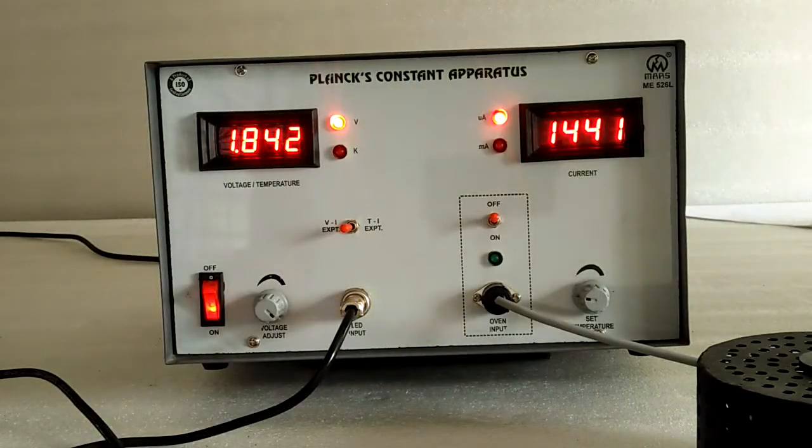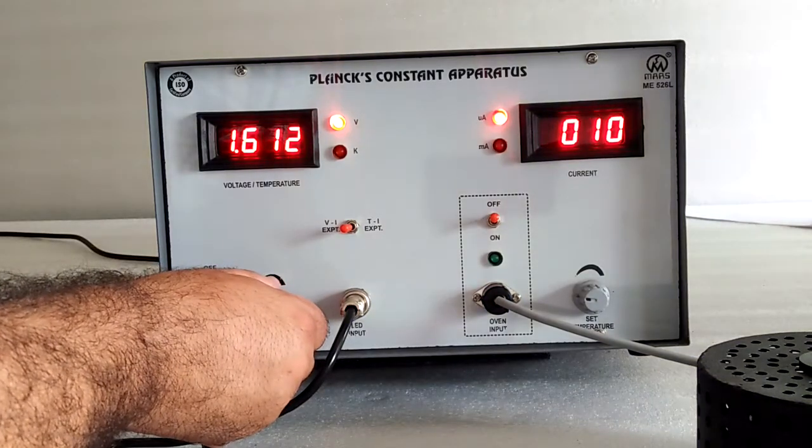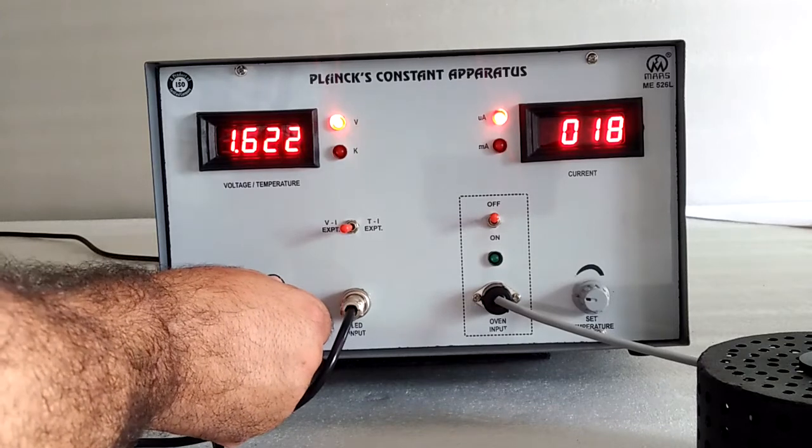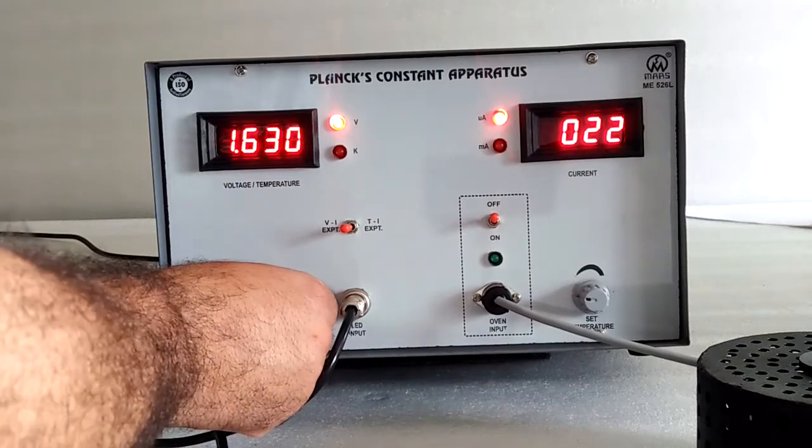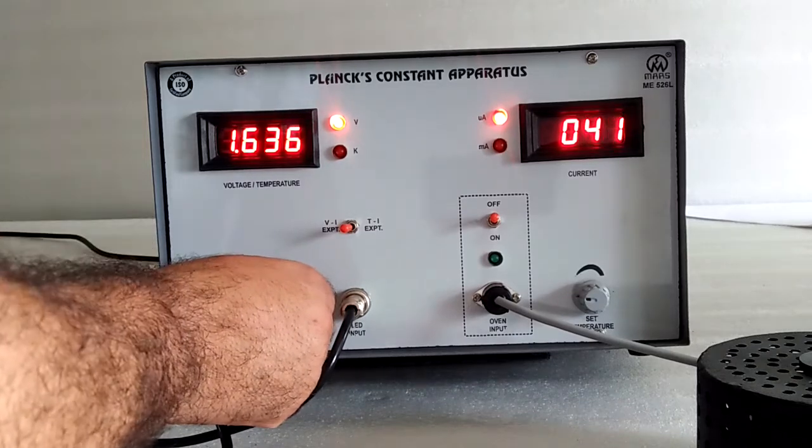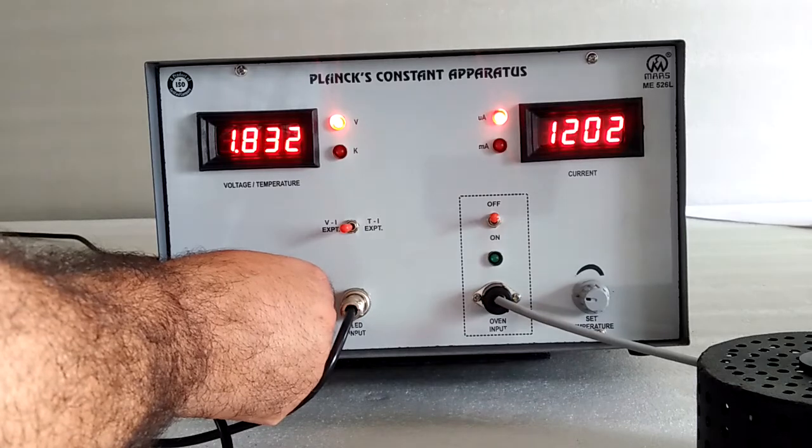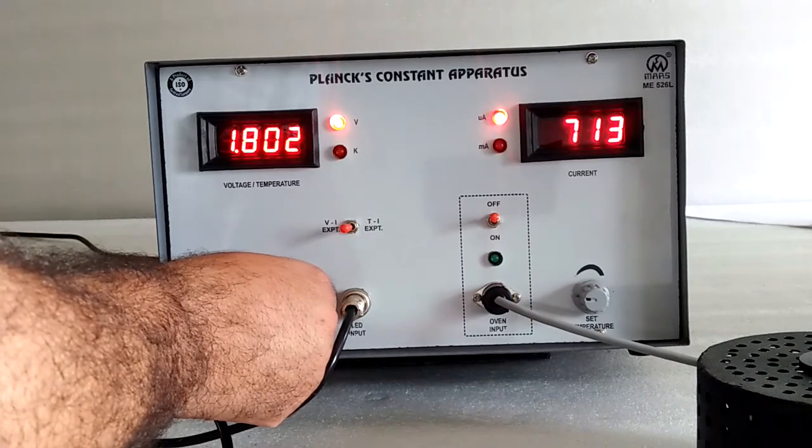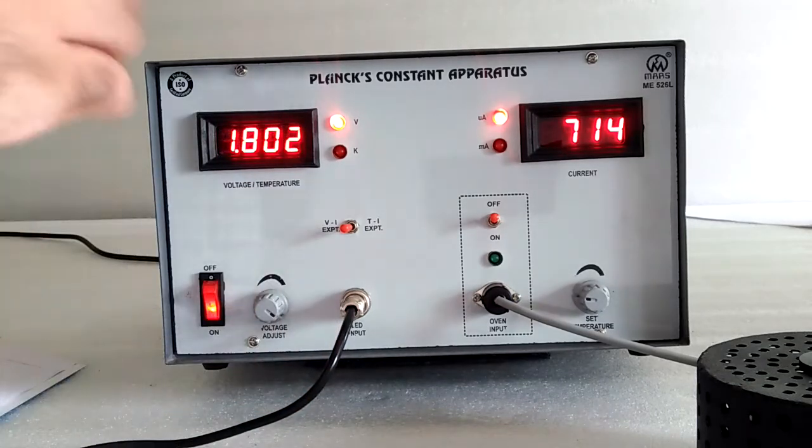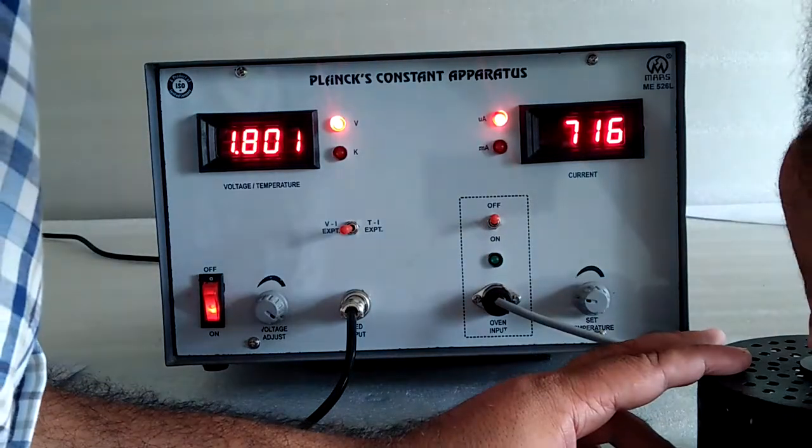And next, we have to fix the voltage at constant value. Suppose, 1.8 volts here. Now, put this LED in the oven very gently.